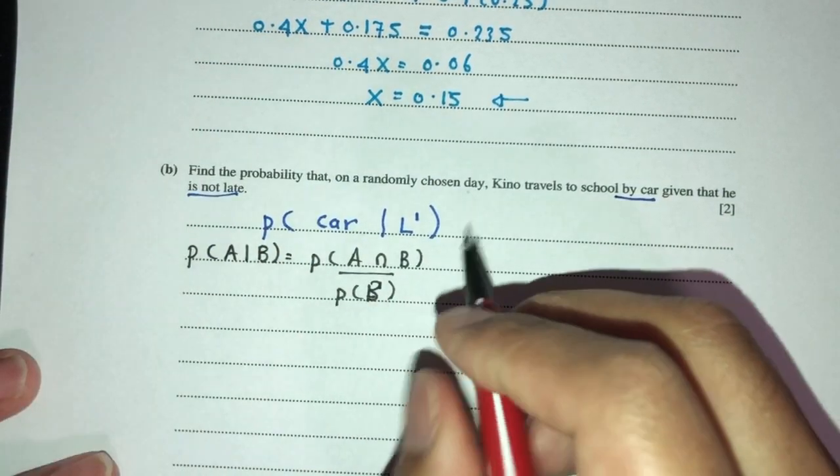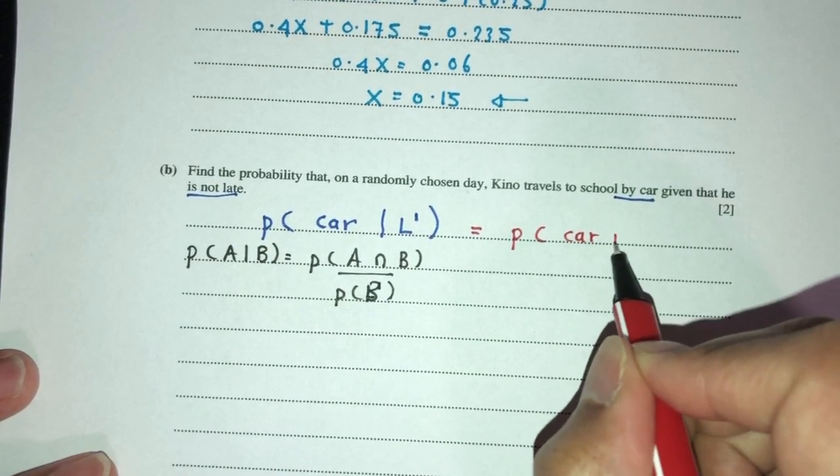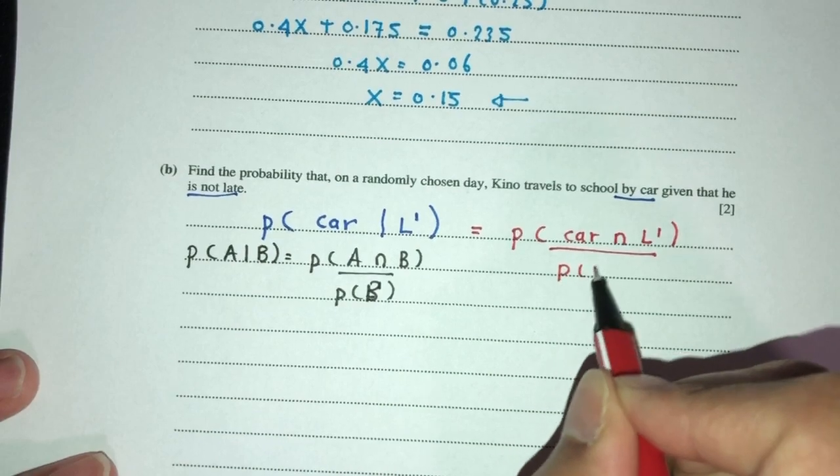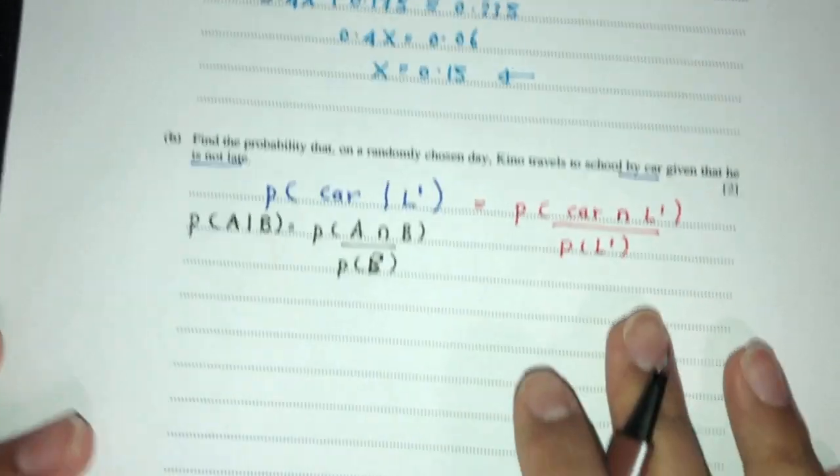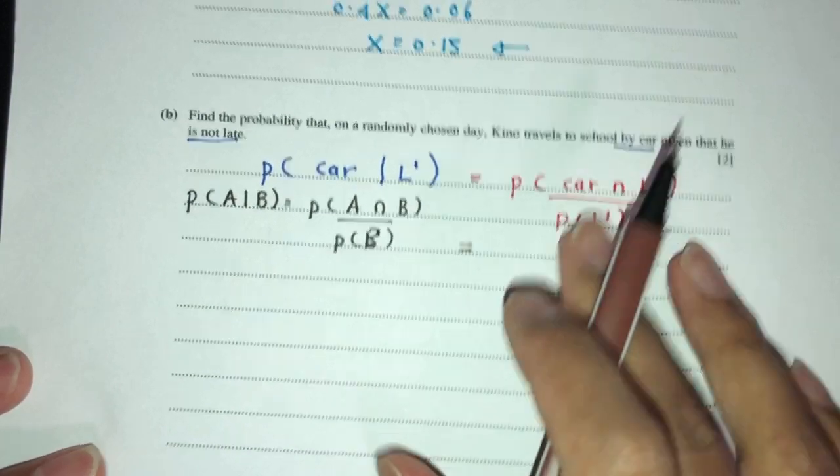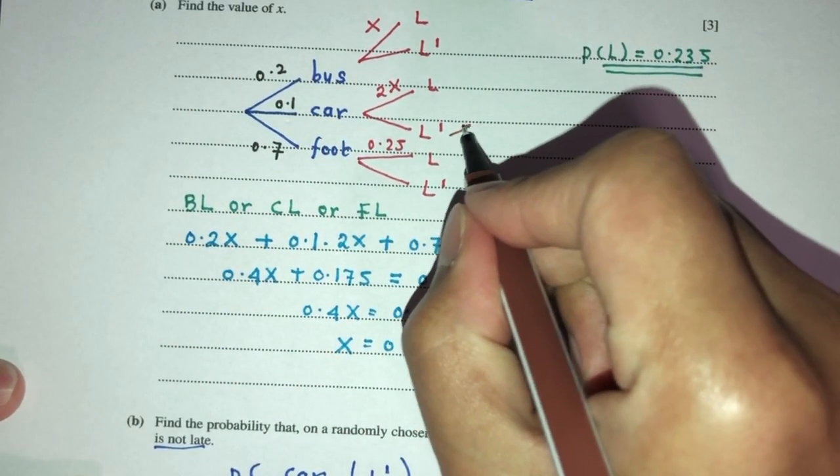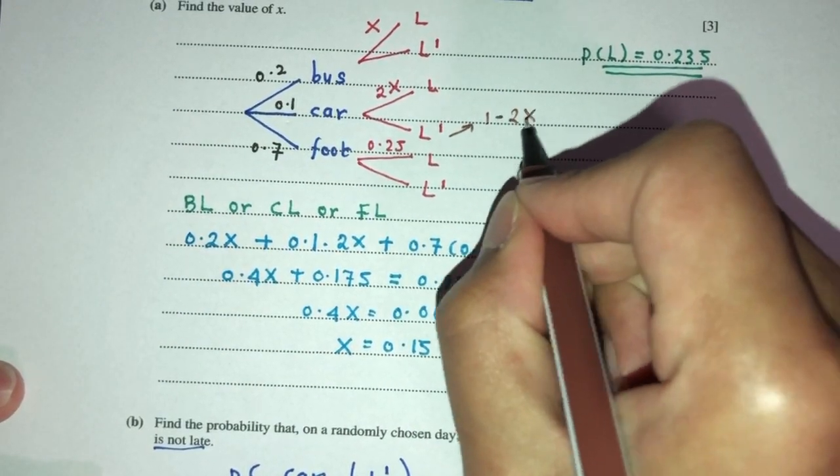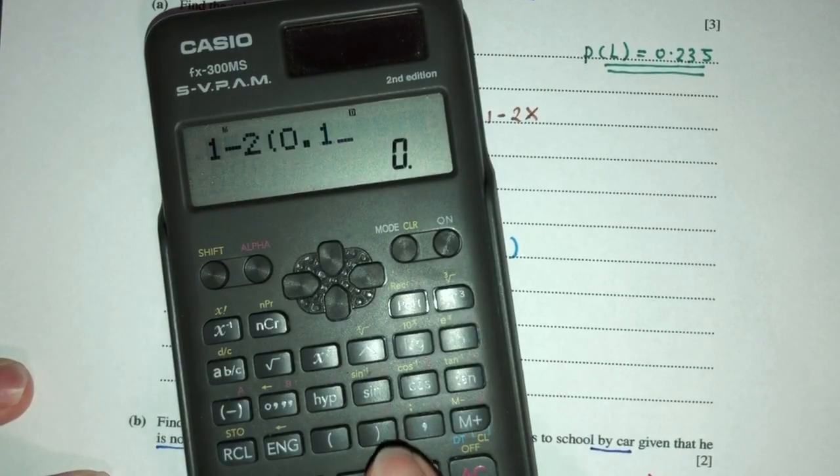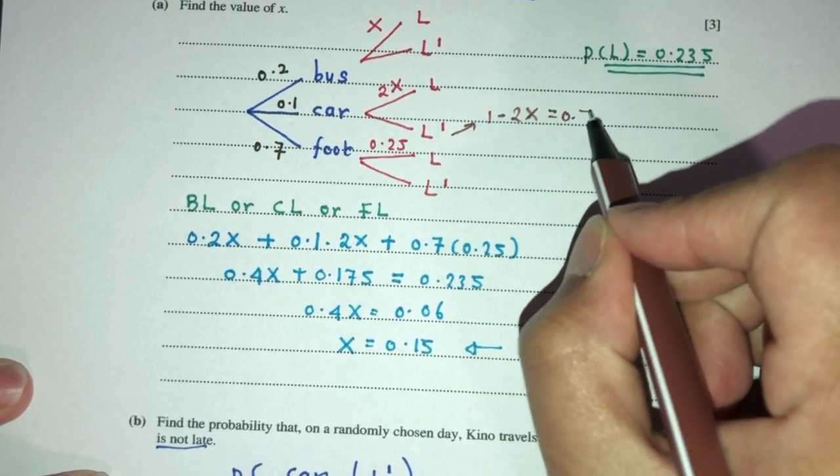Therefore this will become, what is the probability that he goes by car and he is not late, divided by the chance that he is not late. So here we have by car and not late. By car is 0.1, and not late is 1 minus 2 times 0.15, that should become 0.7.